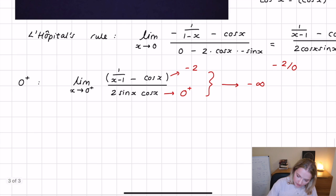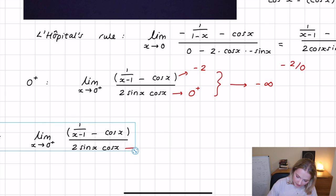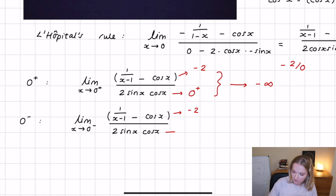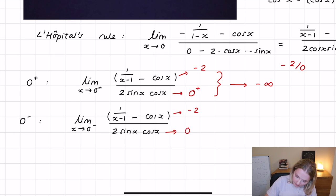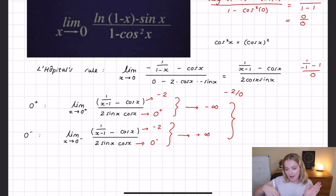We can do the same with the other side. If we take the limit from the negative side, as x tends towards zero minus, the numerator as before approaches negative two — a finite value — and the denominator, because we are just below zero, approaches zero from below. Therefore this limit approaches positive infinity.